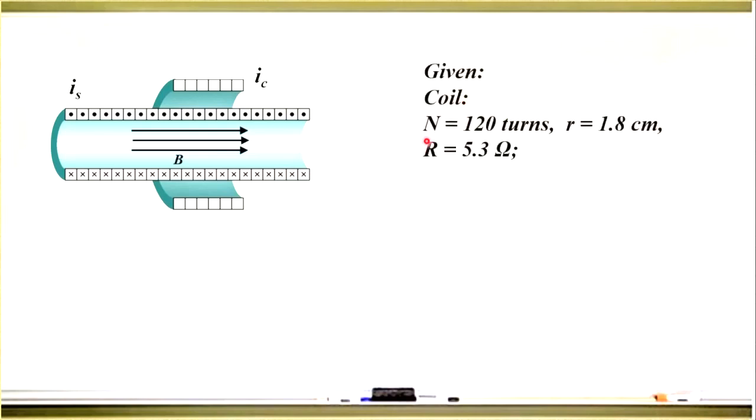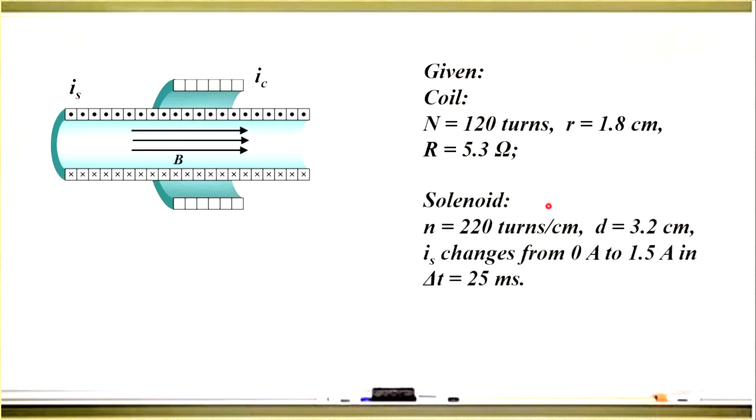radius 1.8 cm, and a resistance 5.3 Ohms. The solenoid has turns density 220 turns per cm, diameter of the solenoid 3.2 cm, and the current changes from 0 to 1.5 amps in 25 ms. We need to find the induced current in the coil.